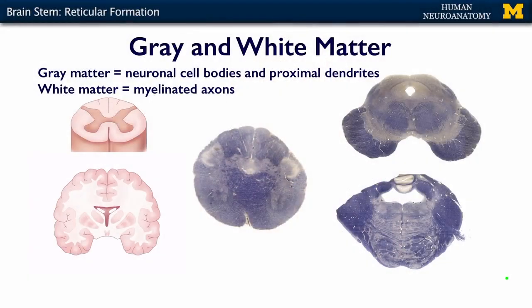In the cortex and in the spinal cord, these delineations between gray matter and white matter are pretty cut and dried — pretty standard looking. You can see in our diagrams that in the spinal cord, the gray matter is on the inside and the white matter is on the outside. When we're talking about the cortex, the gray matter is on the outside and the white matter is on the inside. In the brainstem, things get a little less clear, and you can see all kinds of areas.